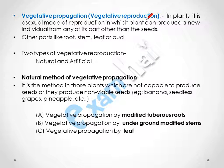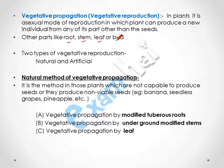In vegetative propagation, a plant can produce a new individual from any of its parts other than the seeds. Some plants can produce sexually and some asexually. When a plant produces asexually, that process is called vegetative reproduction, and in this process a new plant is developed from root, stem, leaf, or bud. It is of two types: natural and artificial, where artificial is a man-made process.